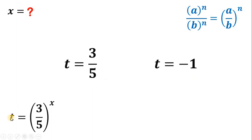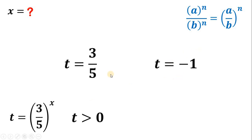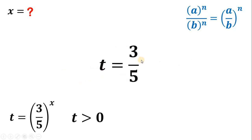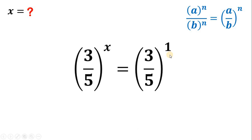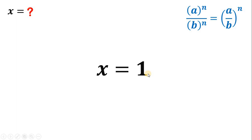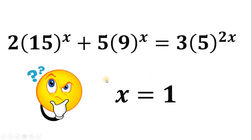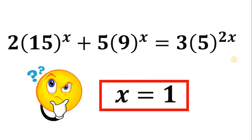Take note that t represents an exponential function, so the value of t cannot be less than 0; t must be greater than 0. Therefore, we reject t equals negative 1 and accept t equals 3 over 5. Since t also equals 3 over 5 raised to the power of x, we can equate them: 3 over 5 raised to x equals 3 over 5, which is 3 over 5 raised to the power of 1. Since both sides have the same base, their exponents must be equal. Therefore, x equals 1, and that is our answer.